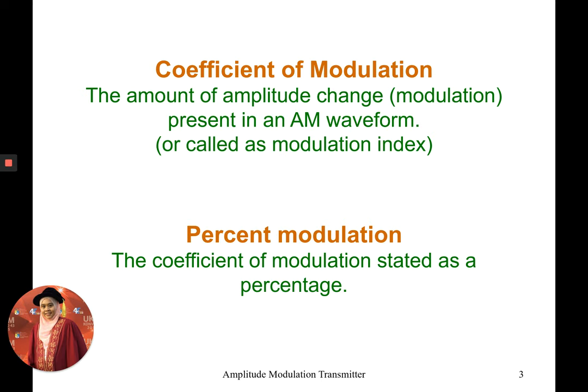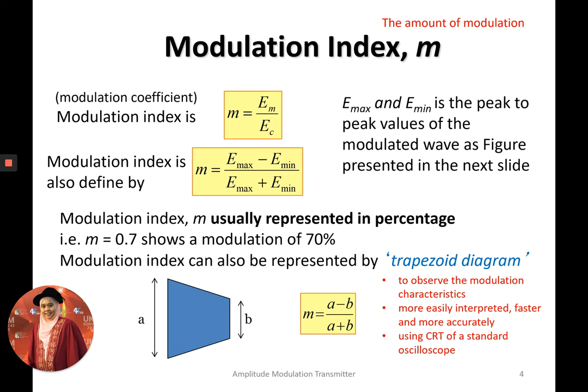The percentage modulation is the coefficient of modulation multiplied by 100% to get the percentage of the modulation index. I have put some additional notes in my slide here that may not be in the lecture notes PDF, so you might want to add this information into your notes.